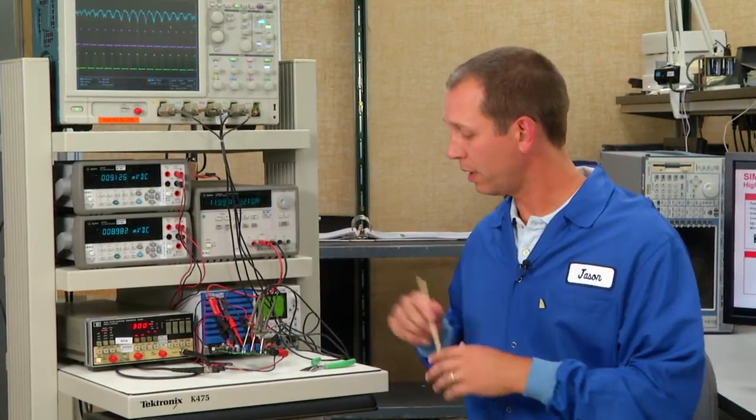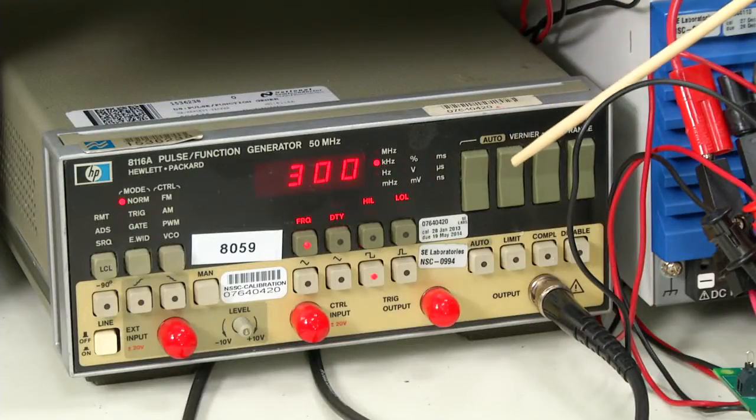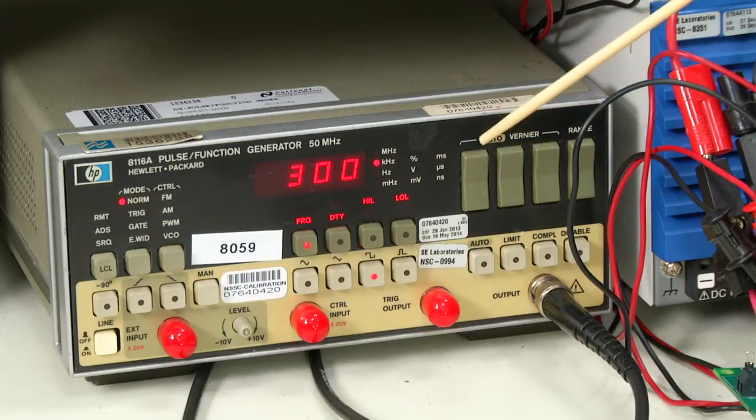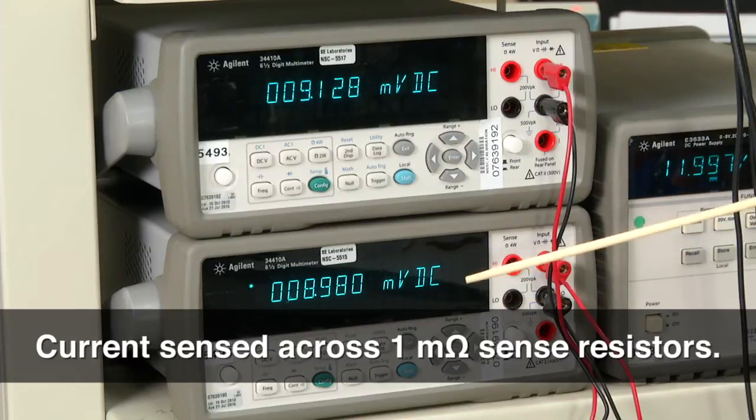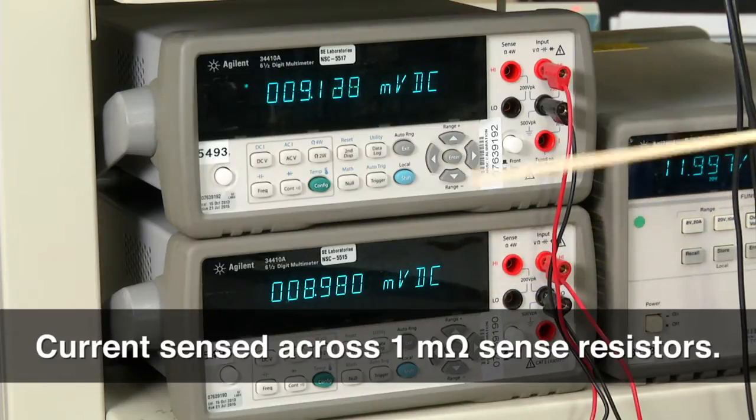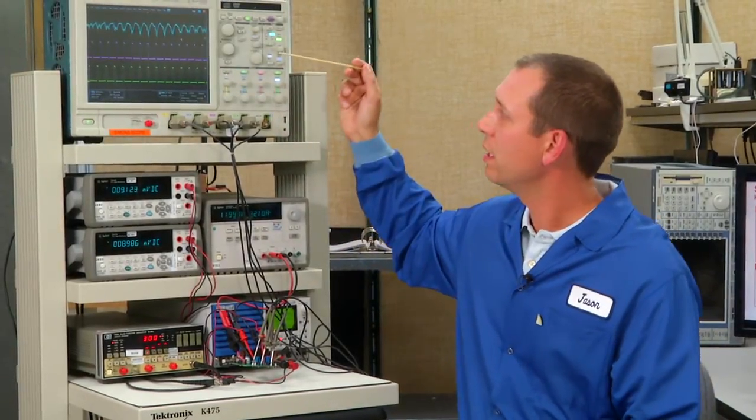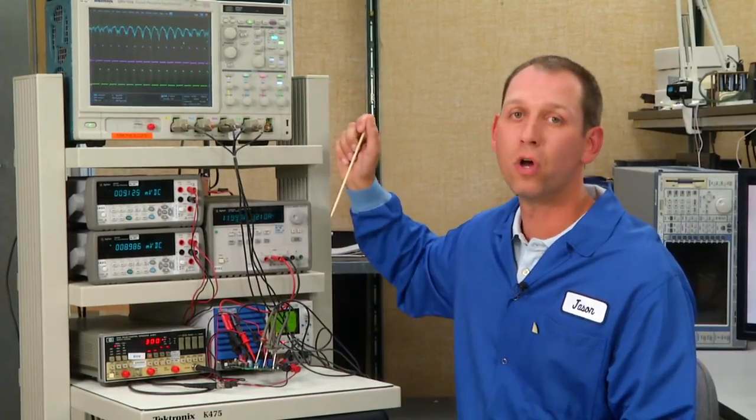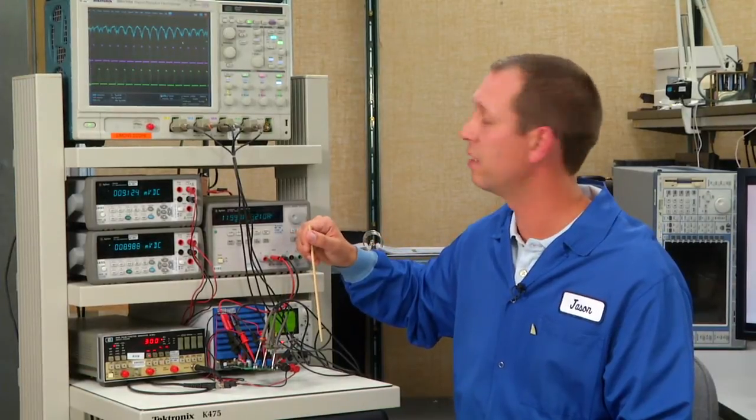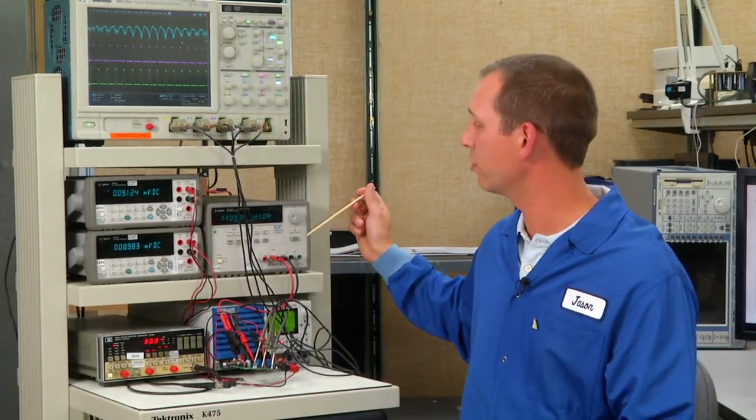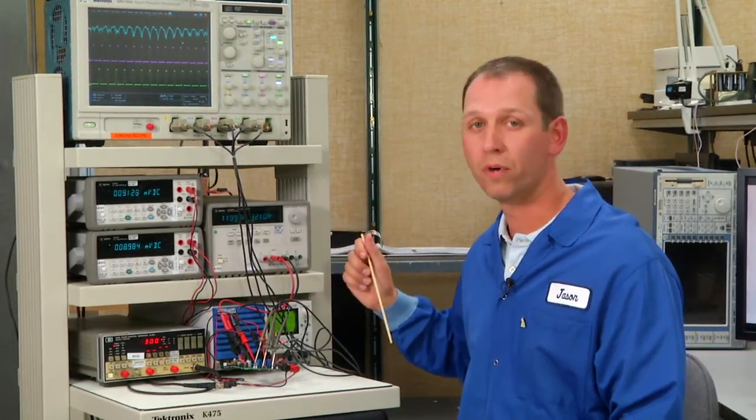To do that today I have a setup that includes a function generator which will supply the external clock for synchronization. We also have two digital multimeters monitoring the output current of each device, and an oscilloscope to monitor both the input and output voltage ripple and the phase nodes of both LMZ31710 devices on the board. I also have an input voltage power supply and a load to draw current from the board.